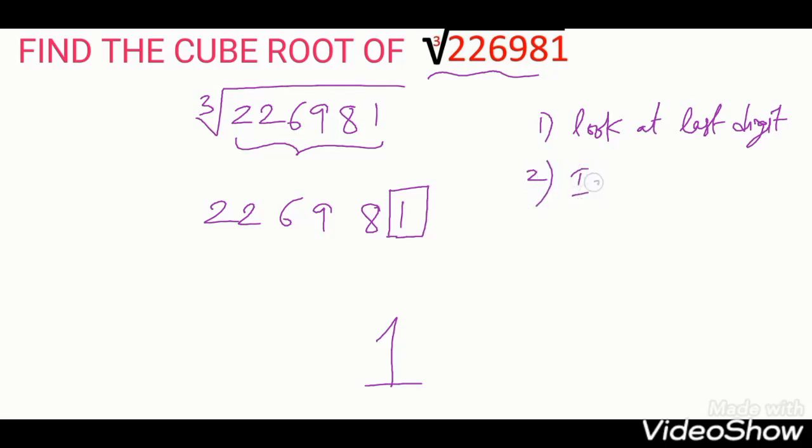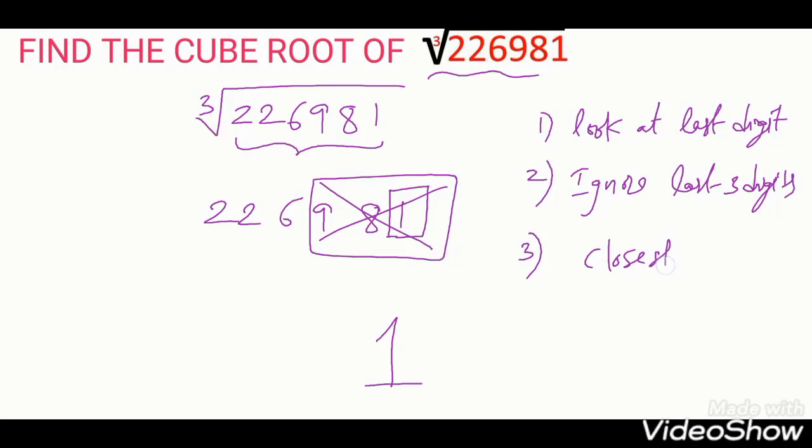Second one, ignore last 3 digits. I have to remove or ignore last 3 digits. These are the 3 digits you have to ignore. Third one, closest cube, closest cube without going over. You should not cross it. You have to take closest cube. Means lesser, closest cube you have to take. You should not cross it.